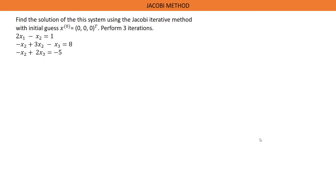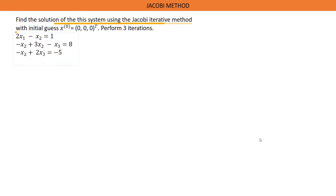Let's look at this example. Find the solution of this system using the Jacobi Iterative Method with an initial guess of S equals [0, 0, 0] transpose. Perform 3 iterations.